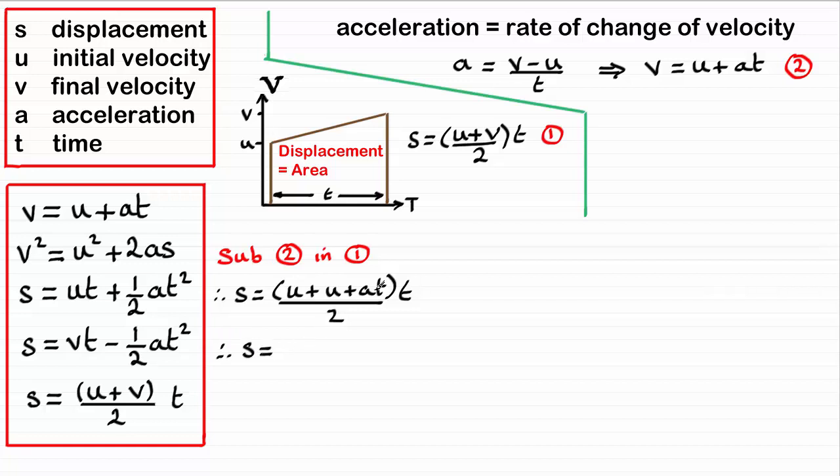And if we simplify what we have in the bracket here, and expand out, we've got 2u times the t, so we've got 2ut, and then we've got plus at squared. And that's all divided by two. And what I can do now is divide both of the terms by two here.